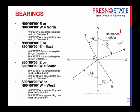For quadrants 2 and 3, the reference line is south. It's the acute angle from this reference line going to the point of interest. So here, south 35 degrees east is a southeasterly direction. Over here, southwesterly: south 55 degrees west. The magnitude is measured from the reference meridian to the point of interest.